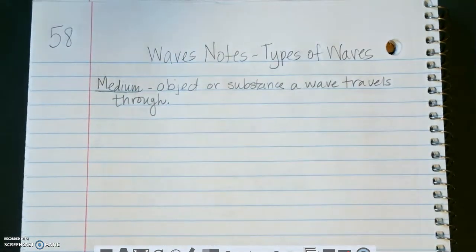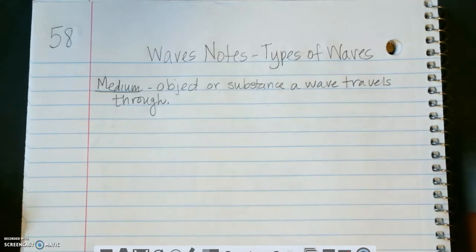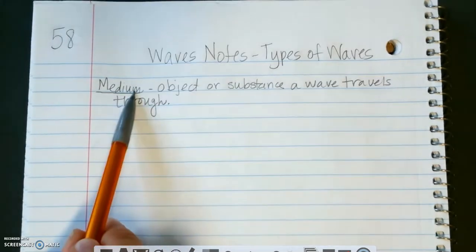So certain types of waves have to have a medium to travel through. Sound waves have to have a medium, meaning they have to travel through something, whether it be air molecules, this table that my paper is sitting on. If I knock on it, sound waves will travel through it. Water, okay, it can travel through solids, liquids, gases, as long as it has a medium to travel through.